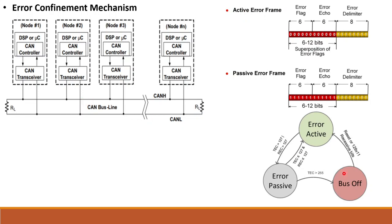To recover from the Bus-Off state, the node must receive 128 multiplied by 11 recessive bits from other nodes, after which it will reconnect to the network. If the node is in Bus-Off and receives this many bits, it joins the network again. If it does not receive that many bits, a restart of the controller will bring it back to the Error Active state.